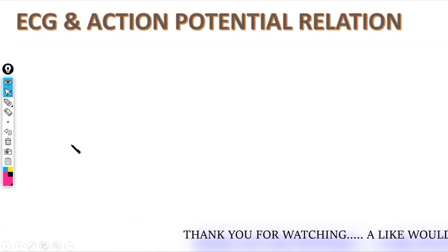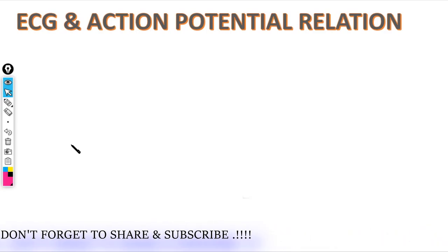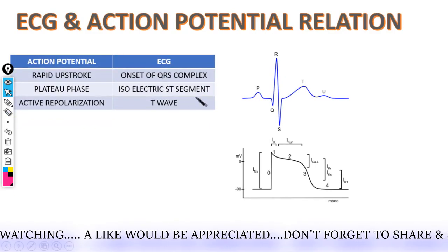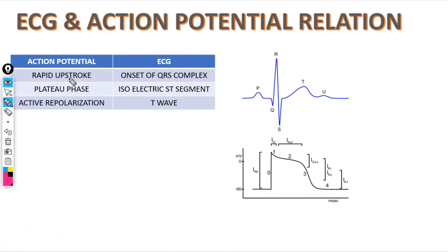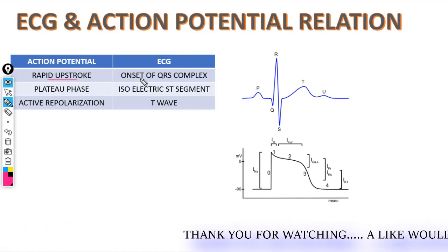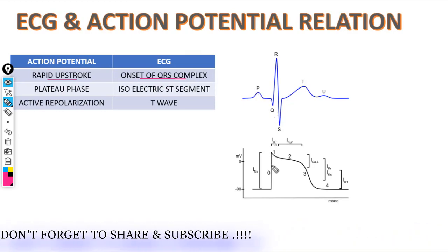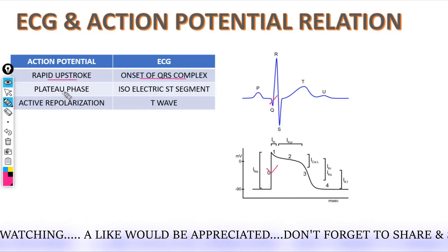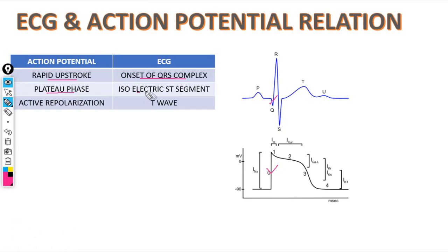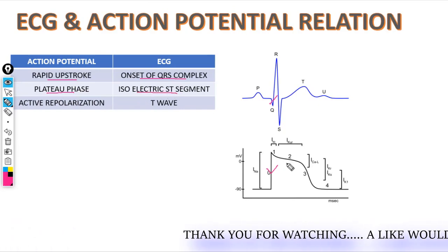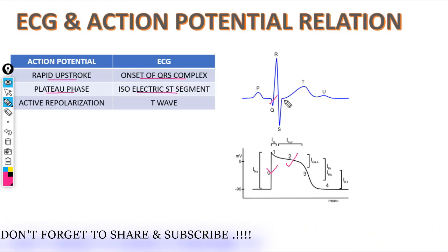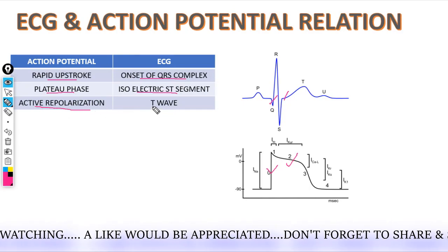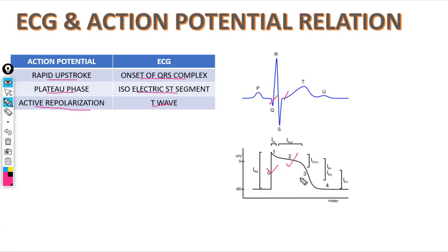Now let's see about ECG and action potential relationship, shown here in the diagram. The rapid upstroke in action potential correlates with the onset of the QRS complex in ECG. The plateau phase in action potential correlates with the isoelectric ST segment. Active repolarization of the action potential correlates with the T wave in ECG.